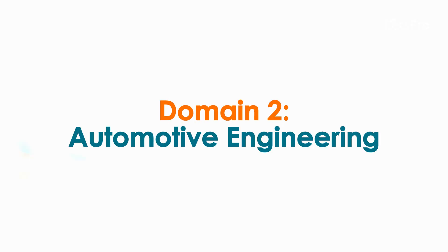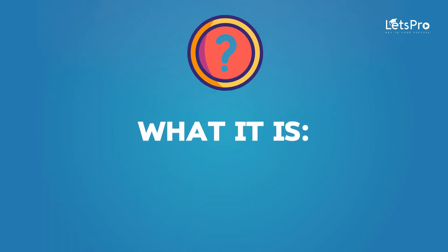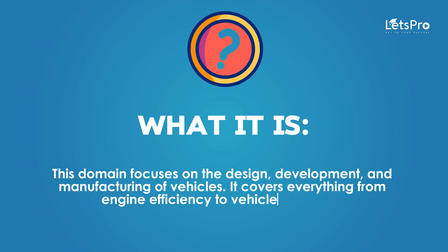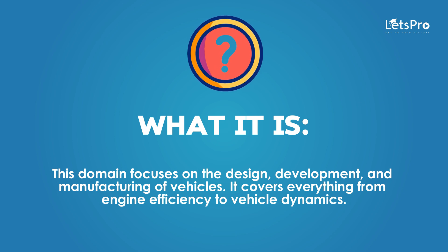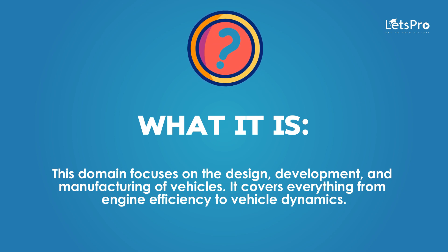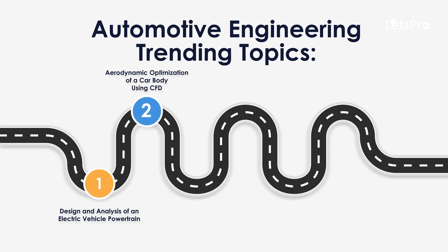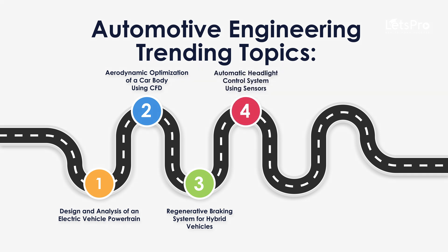Domain 2: Automotive Engineering. This domain focuses on the design, development and manufacturing of vehicles. It covers everything from engine efficiency to vehicle dynamics. Trending topics include: design and analysis of an electric vehicle powertrain, aerodynamic optimization of a car body using CFD, regenerative braking system for hybrid vehicles, automatic headlight control system using sensors, and active suspension system for improved ride comfort.